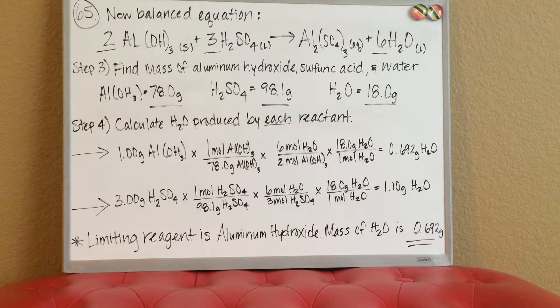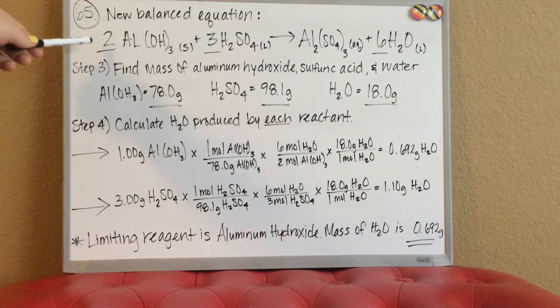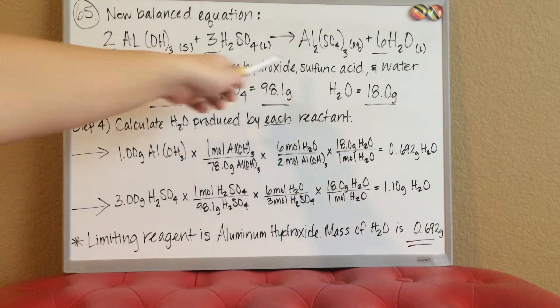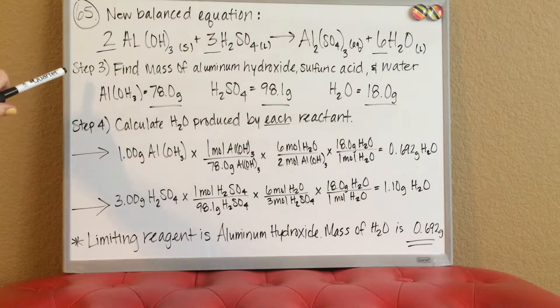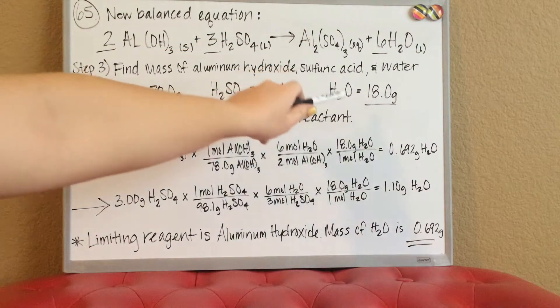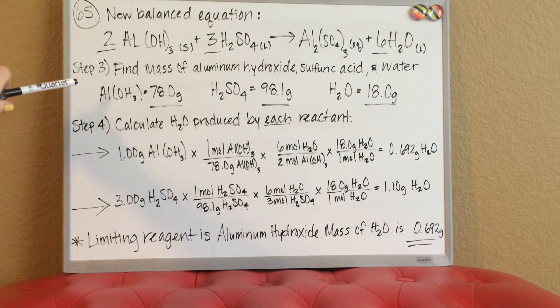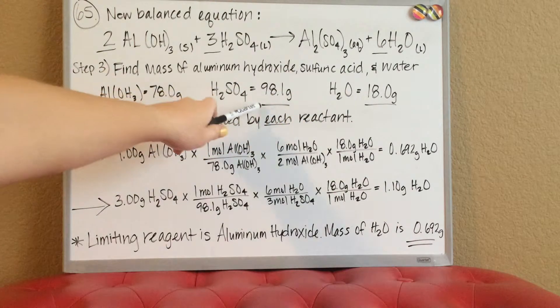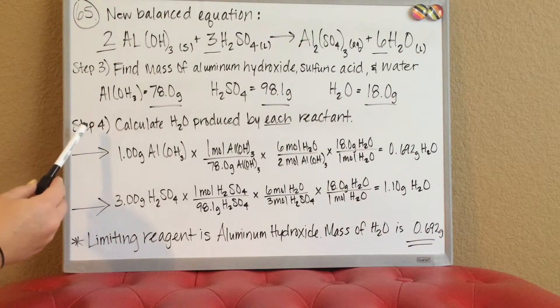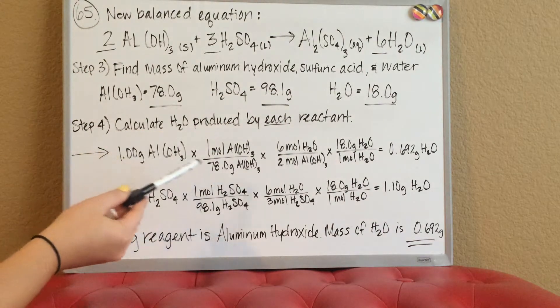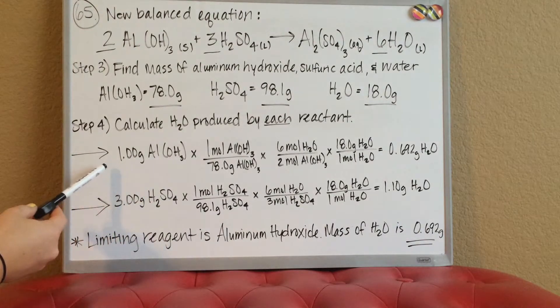Now that we have our new balanced equation with the new leading coefficients, step three is we want to find the mass of aluminum hydroxide, the sulfuric acid, and the H2O. Using a periodic table, I went ahead and added those values up here. Then in step four, we're gonna use these values to find the mass of the H2O.